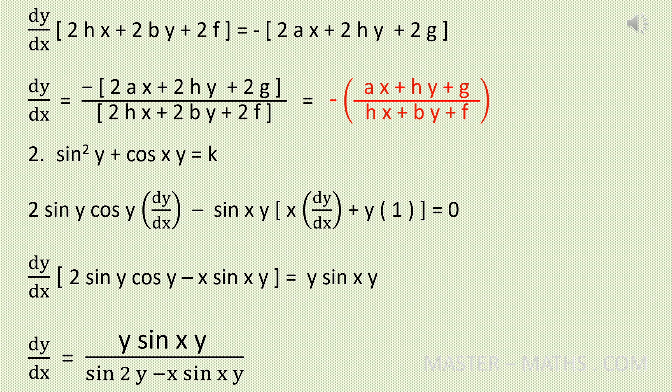Second term: cos of xy. On differentiating, you get minus sin xy into the product rule of xy: x into dy by dx plus y into 1, equals 0. Next, take dy by dx common and bring the remaining terms to the right hand side. You get dy by dx into (2 sin y cos y minus x sin xy) equals y sin xy. So dy by dx equals y sin xy divided by (sin 2y minus x sin xy).